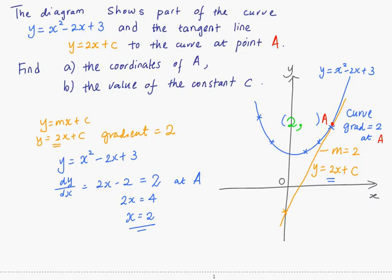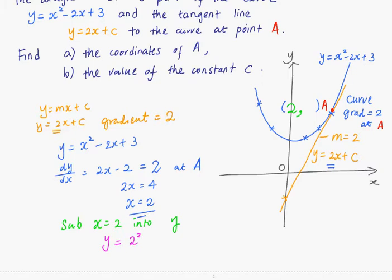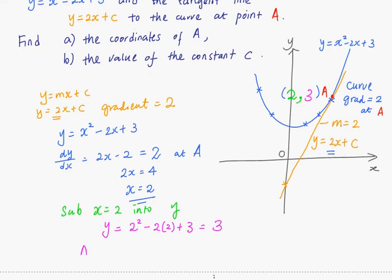Now we need to find the y coordinate of A. That is easy. Just substitute x equals 2 into y. So your y will be equal to 2 squared minus 2 times 2 plus 3. That gives you 3. So you have done part A. A is equal to (2, 3). That's the answer.